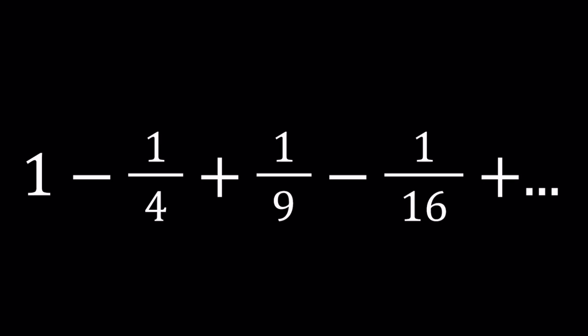Hello everyone. In this video we're going to be evaluating an infinite sum or an infinite series. We have 1 minus 1/4 plus 1/9 minus 1/16, and so on and so forth. We have the perfect squares in the denominator — in other words, the reciprocals of perfect squares — but the signs also alternate: plus, minus, plus, minus, and so on.